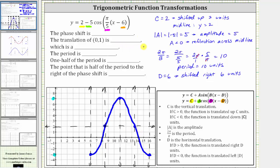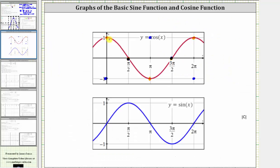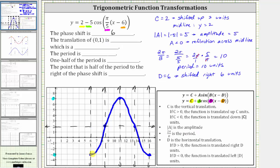Before we complete more of the graph, let's complete the statements above. The first statement: the phase shift is a horizontal shift of right six units — we will enter positive six, indicating the shift is right six units. Remember, when d is negative, the graph is shifted left the absolute value of d units. The translation of the point (0, 1): when graphing the basic cosine function, (0, 1) is the first point we graph. Because we have a phase shift, our first point is instead (6, negative three), which is a low point — and therefore we classify this as a minimum.